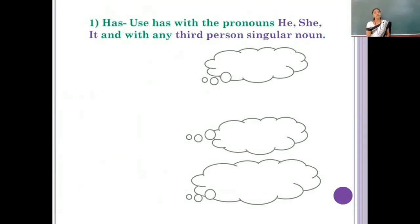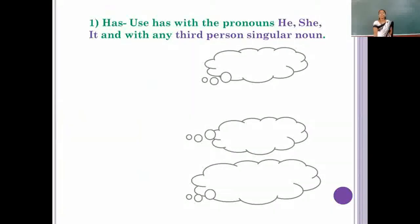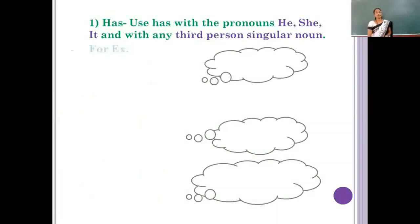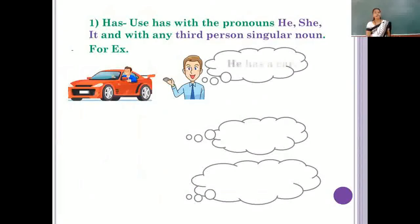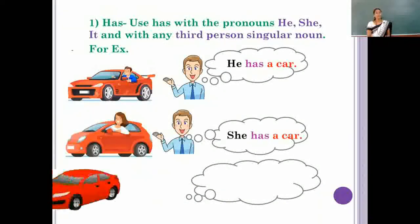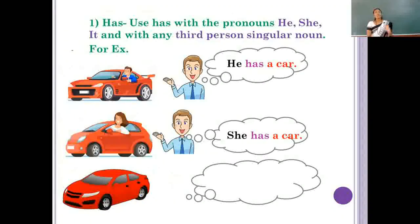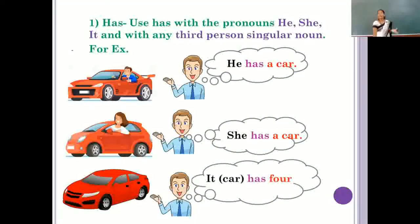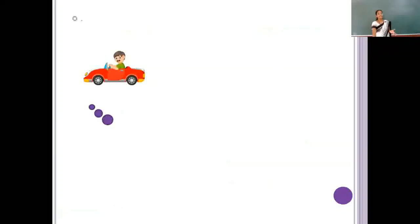Now, let us see the use of has. Has we can use with the pronoun he, she, it and with any singular noun. For example, he has a car. Now, if we are speaking about the color of car and it is singular, it has red color.